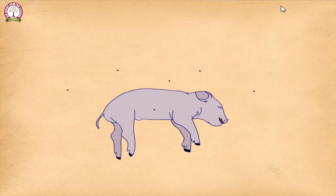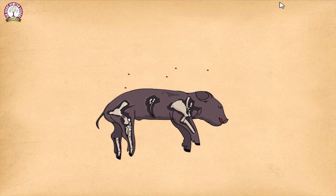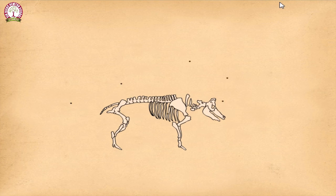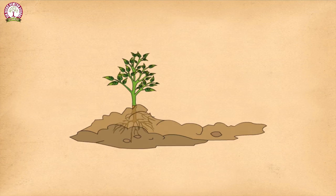When animals die and decay, they also form a part of the soil. All these factors work together to form the layer of soil that plants use to grow.